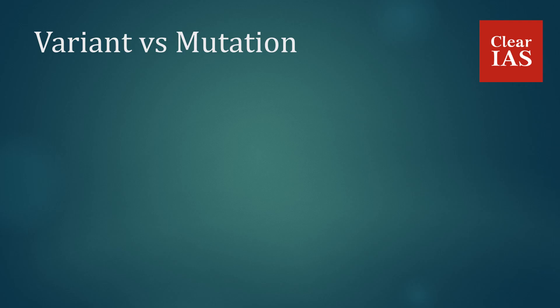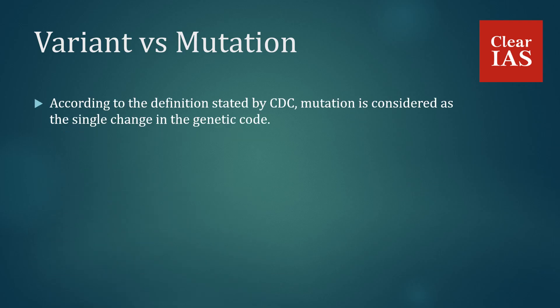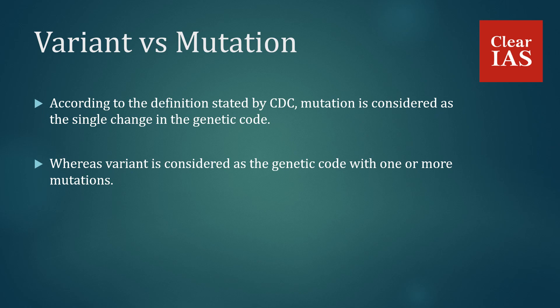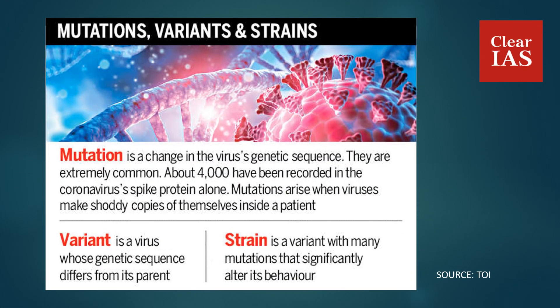Variant vs Mutation. According to the definition stated by CDC, a mutation is considered as a single change in the genetic code, whereas a variant is considered as a genetic code with one or more mutations. It is also useful to distinguish strains: a mutation is a change in the virus genetic sequence and is extremely common; a variant is a virus whose genetic sequence differs significantly from its parent; and a strain is a variant with many mutations that significantly alter its behavior, such as increased transmissibility.